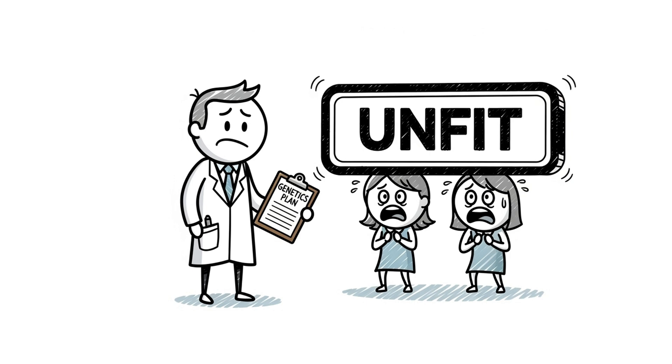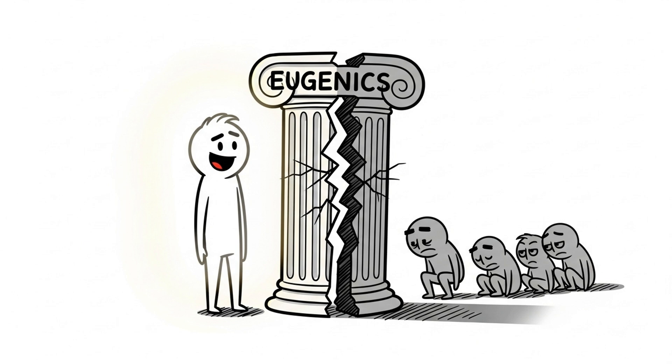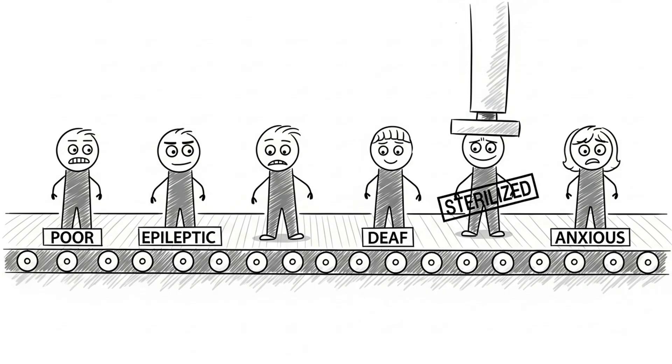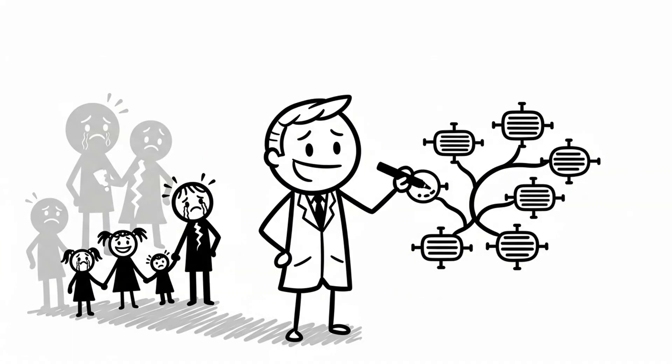Once upon a time, scientists thought they could breed better humans. Not through wisdom, but through forced sterilization. This idea was called eugenics. From the Greek, meaning well-born. But what it really meant was control and exclusion. In the early 1900s, the United States became one of its loudest advocates. Yes, before Hitler. Over 60,000 people in the U.S. were sterilized without consent. Many were poor, disabled, or simply misunderstood. Eugenics was wrapped in lab coats and jargon. But its core was cruelty, masked as science.